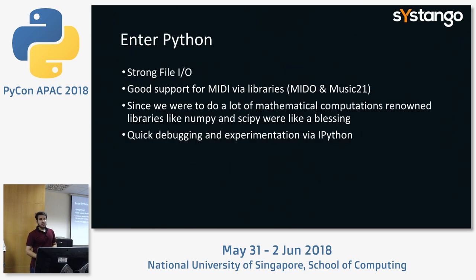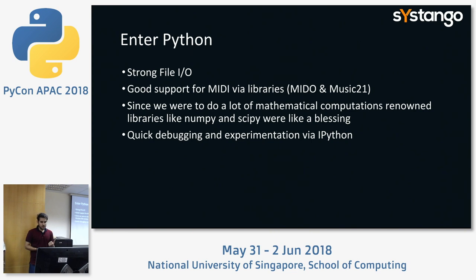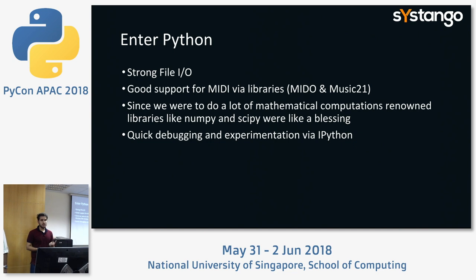How do we use Python? First and foremost, we wanted file processing, and Python provides good file I/O mechanisms — that was great aid for our work. Apart from that, there are good libraries like Mido and Music21 for music development, which we used extensively and will demo — how we use them to represent MIDI as an object and do operations on it. For the whole algorithm, we wanted mathematical computations, and NumPy and SciPy were a blessing for us.